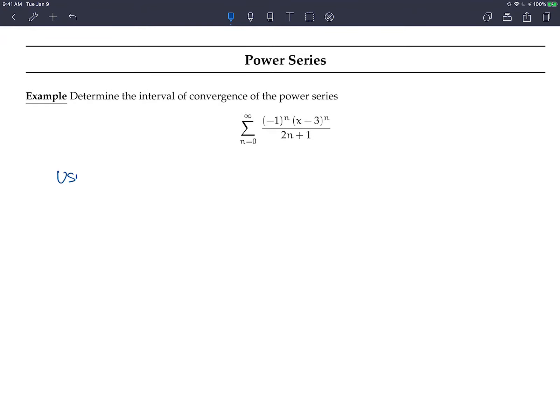So again, we're using the ratio test, and we want to check the limit when n goes to infinity of the a_{n+1} term divided by the a_n term in absolute values, because we're checking for absolute convergence, which implies convergence.